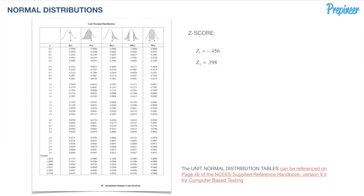We take these z-scores back to our unit normal distribution tables. If the z-scores were uniform — for instance, one being -4.56 and the other +4.56 — we could use the W(x) column directly for the banded probability. Unfortunately, we don't have a uniform band here, so we have to use other columns and combine them to get the banded probability we're looking for. We'll use the F(x) column.